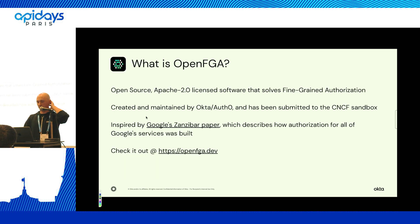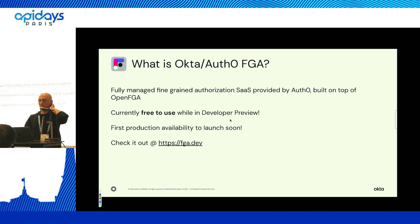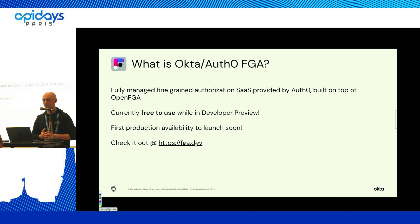If you want to learn more, the concept came from Google Zanzibar — strongly recommended reading. Our implementation is called OpenFGA, accessible at openfga.dev. It's an open-source project — a Docker container you can download and start using. If you need something more enterprise-ready, we started implementing OpenFGA at Okta to host it on our cloud platform, run it, manage it, audit it, give SLA, and so on. For now it's free to use as a developer preview, so you can create a free account and test it. Our first production availability should be early next year.